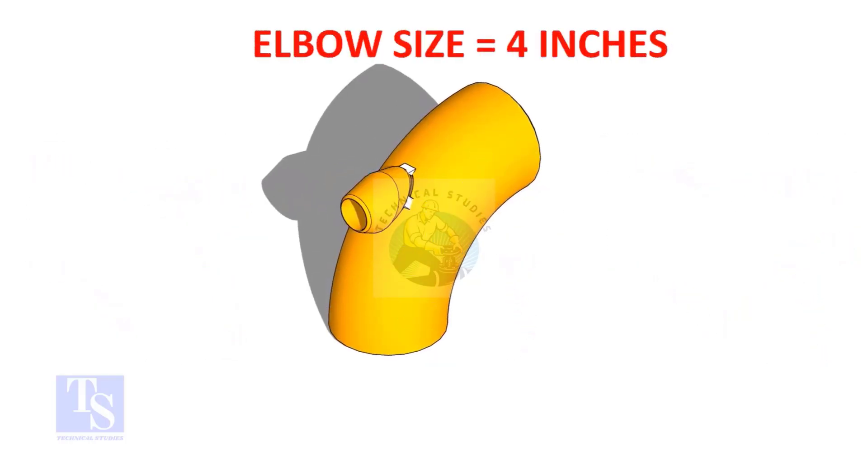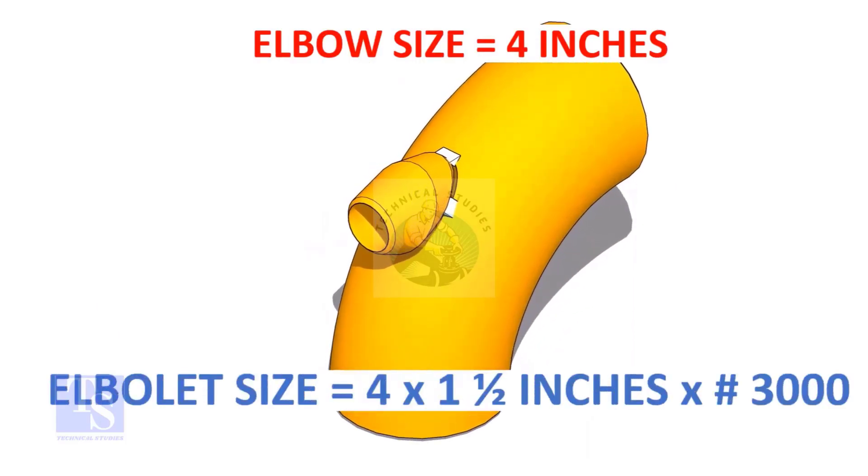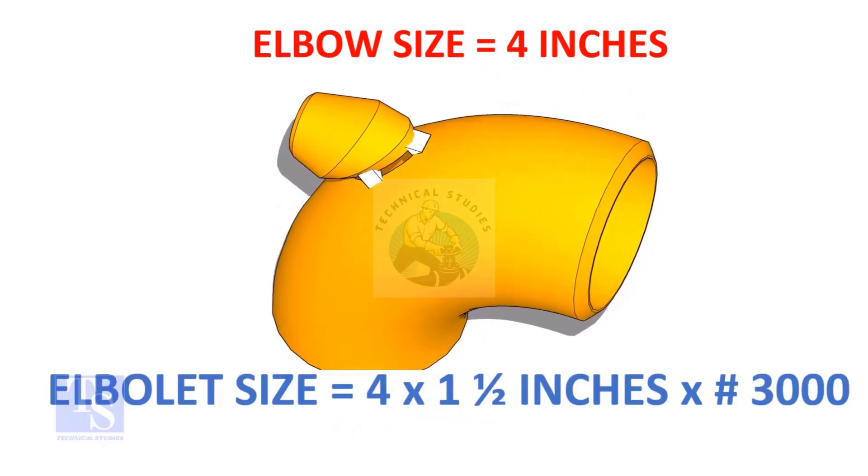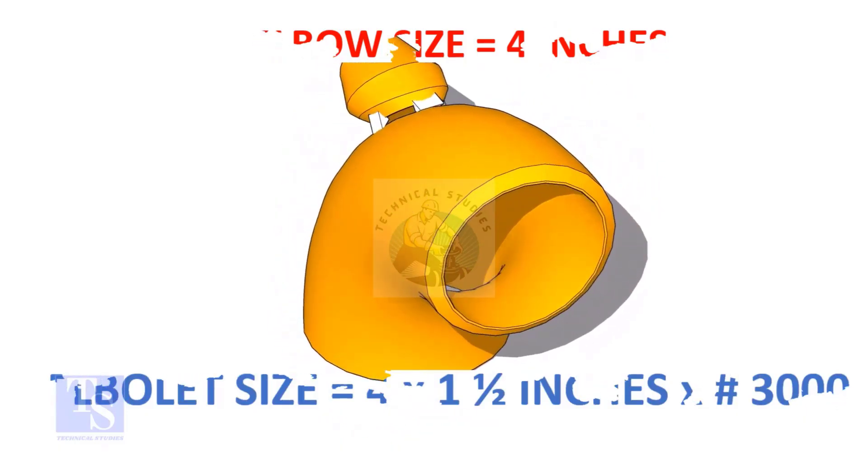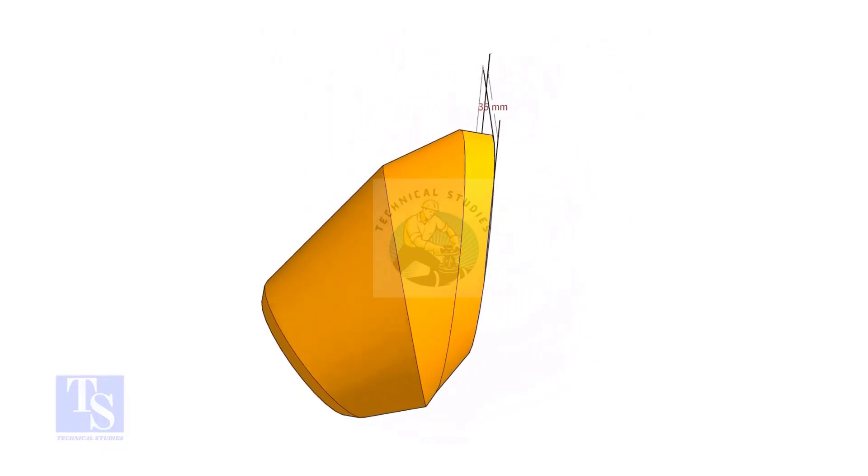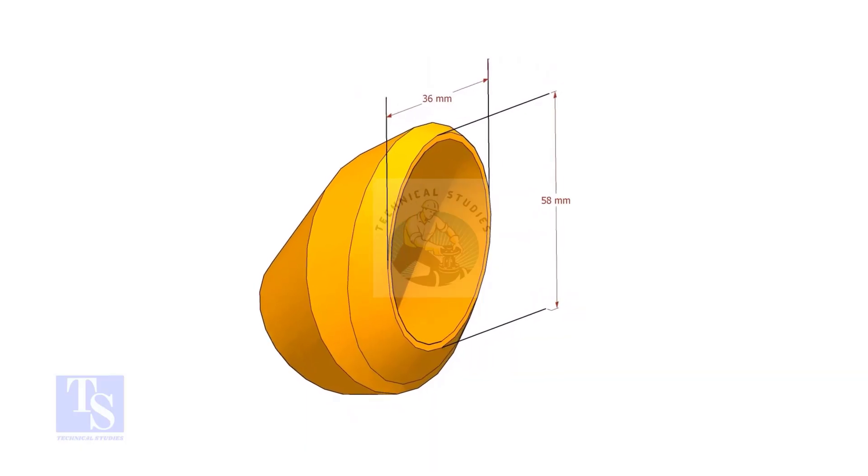The size of our elbow is four inches, and the size and rating of the elbowlet is one and a half inches and three thousand pounds respectively. The bottom opening size of the elbowlet is 36mm by 58mm. Please note down these dimensions.